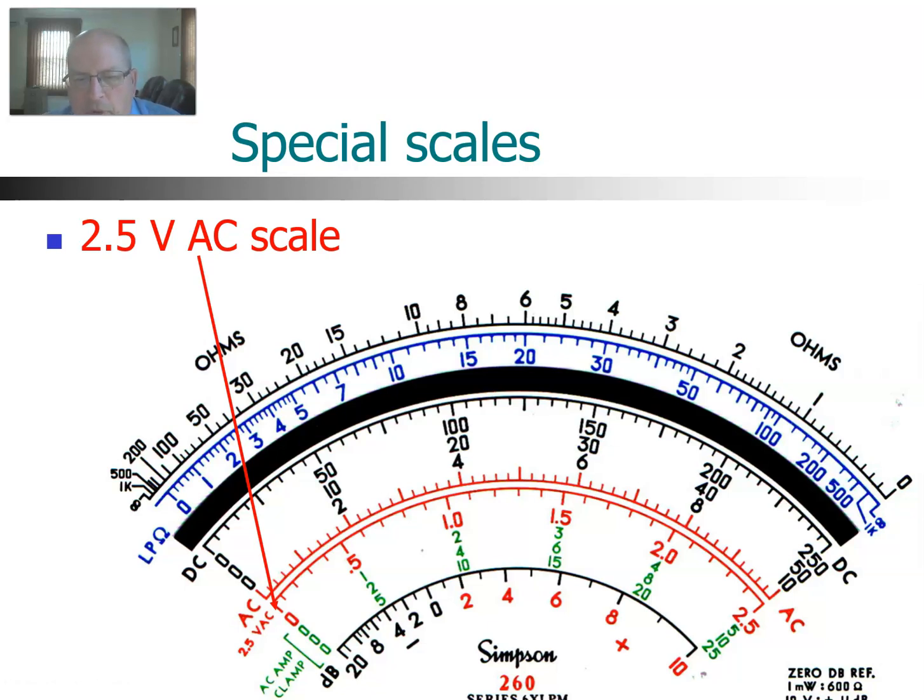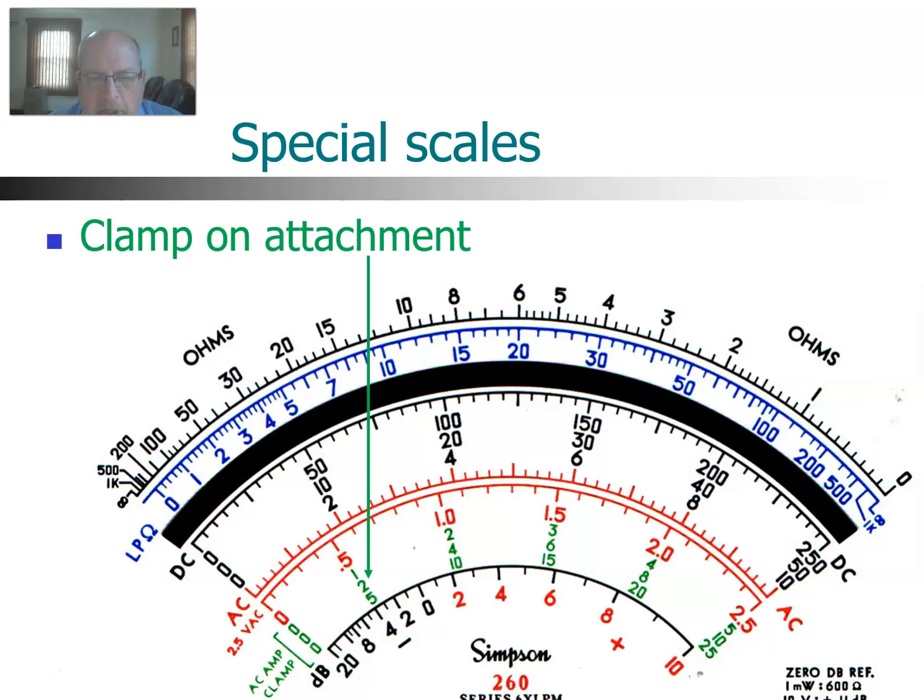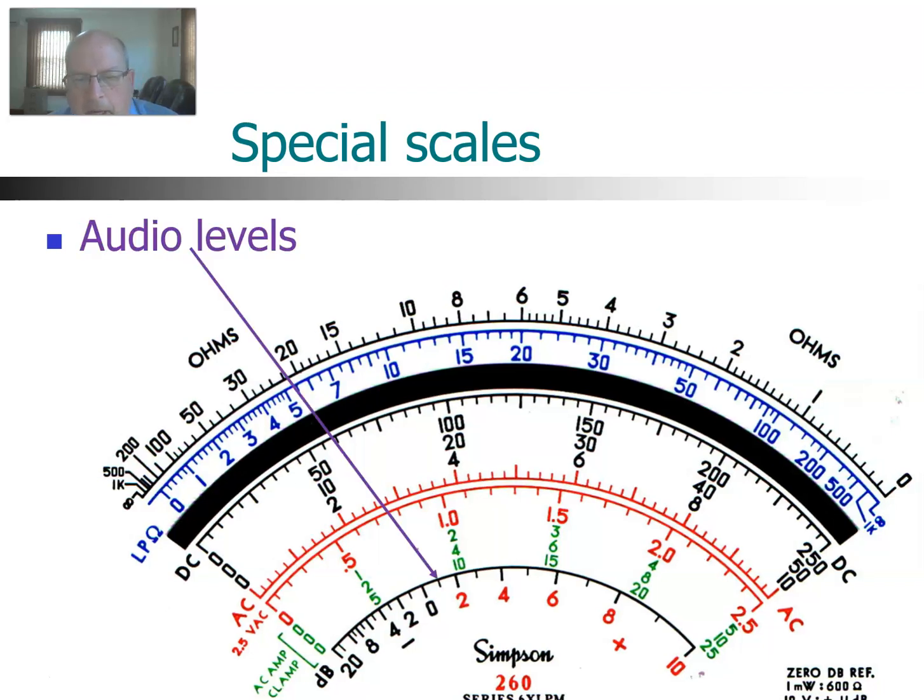That pretty much covers most of what you're going to be utilizing. The low power one, you're reading the low power ohms. But here are some other specialized ones. This bottom red scale is if you're on the 2.5 volt range. They have a special scale for that particular range. Then the green readings are for a special adapter called a clamp-on. We literally clamp around a wire and measure the magnetic field to determine the current. With that clamp-on attachment, you'd be reading these green numbers. And the bottom scale is a decibel scale for making audio measurements.